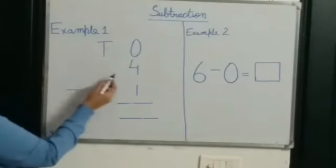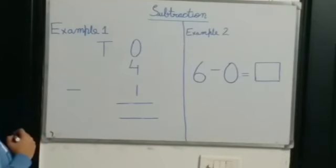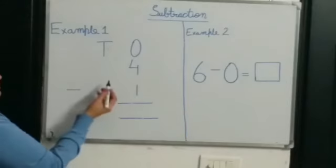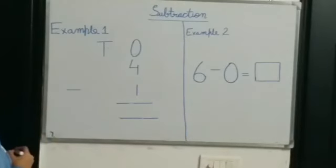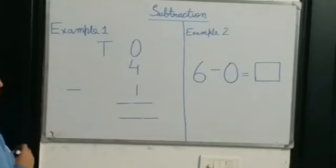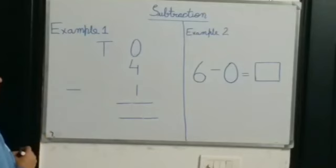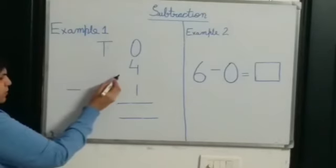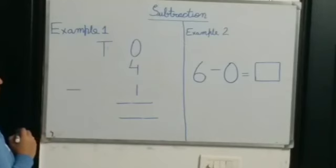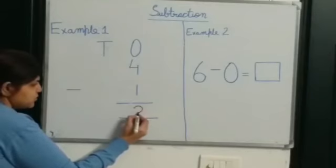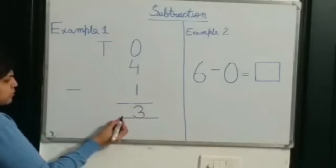Our first example is 4 minus 1. So now kids, tell me which number is greater — number 4 or number 1? Yes, number 4 is greater than number 1. So we will keep number 4 in our mind and take out 1 finger. After that, as it is 4 minus 1, we will start backward counting from number 4 and count till 1. It is 3. So our answer is 3. 4 minus 1 is equal to 3.